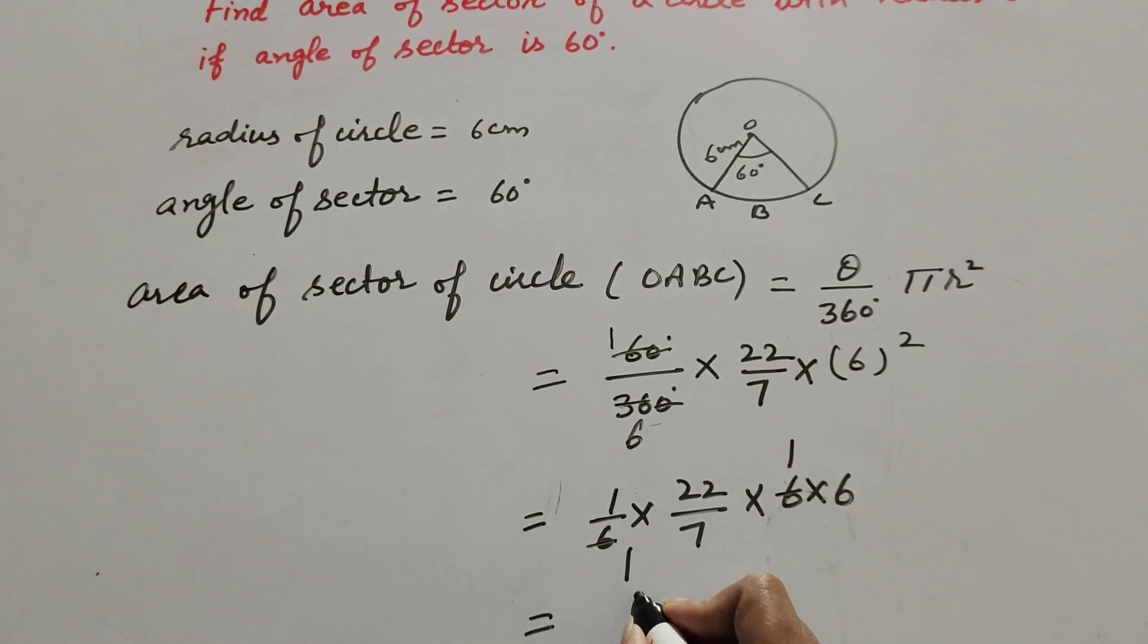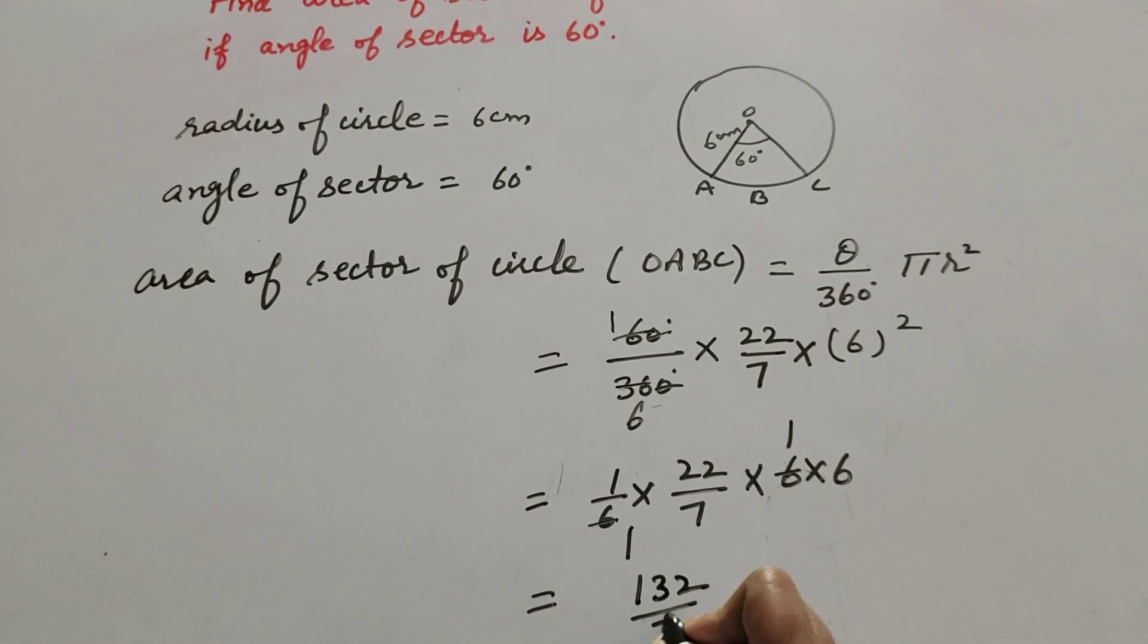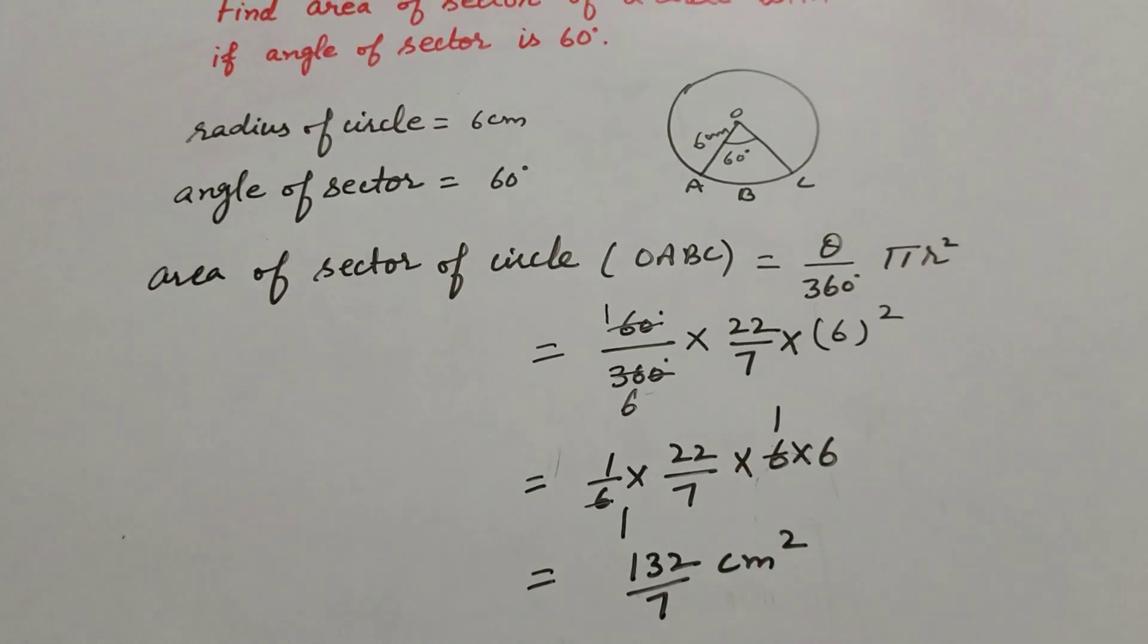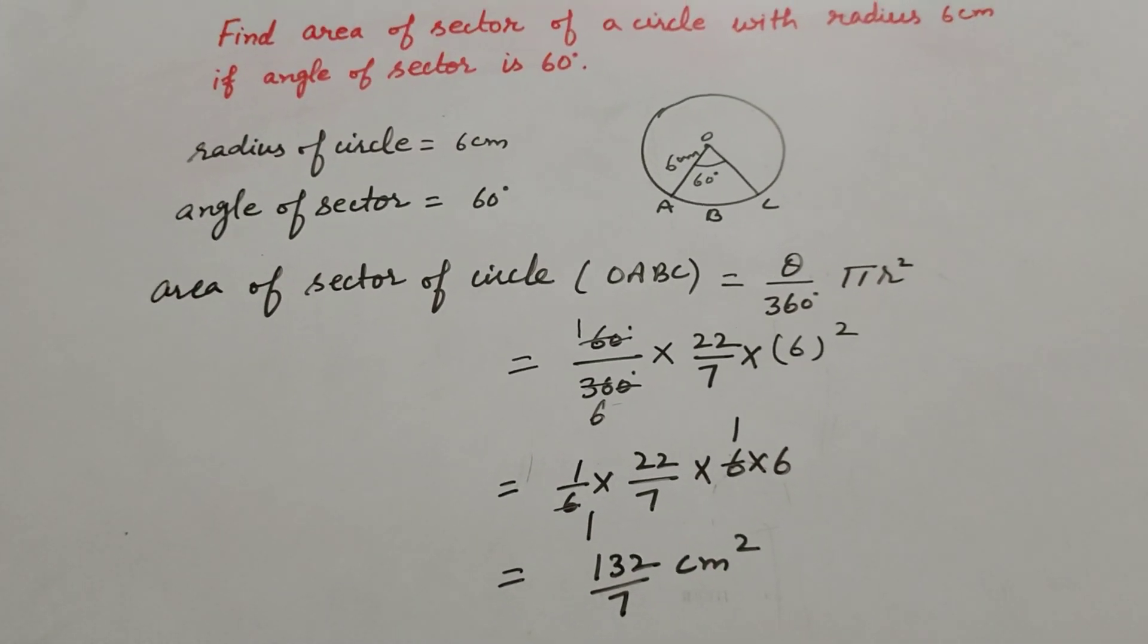132 over 7 cm square. So area of the sector of circle O A B C equal to 132 over 7 cm square.